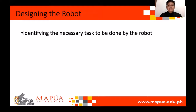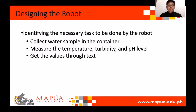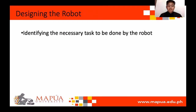The necessary tasks to be done by the robot are: collect water sample in the container, measure the temperature, turbidity, and pH level, and get the values through text. The computation was discussed in Chapter 3.